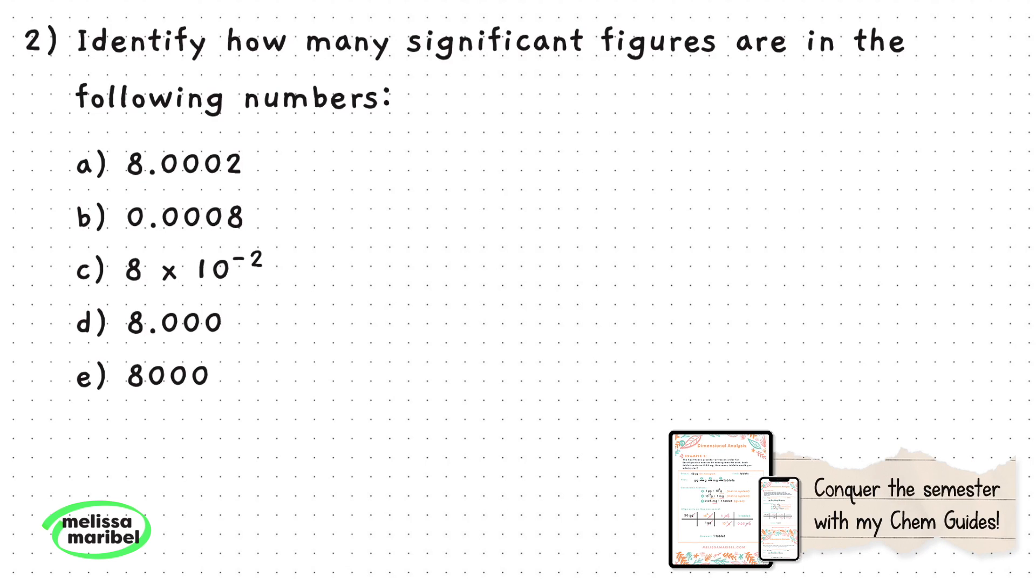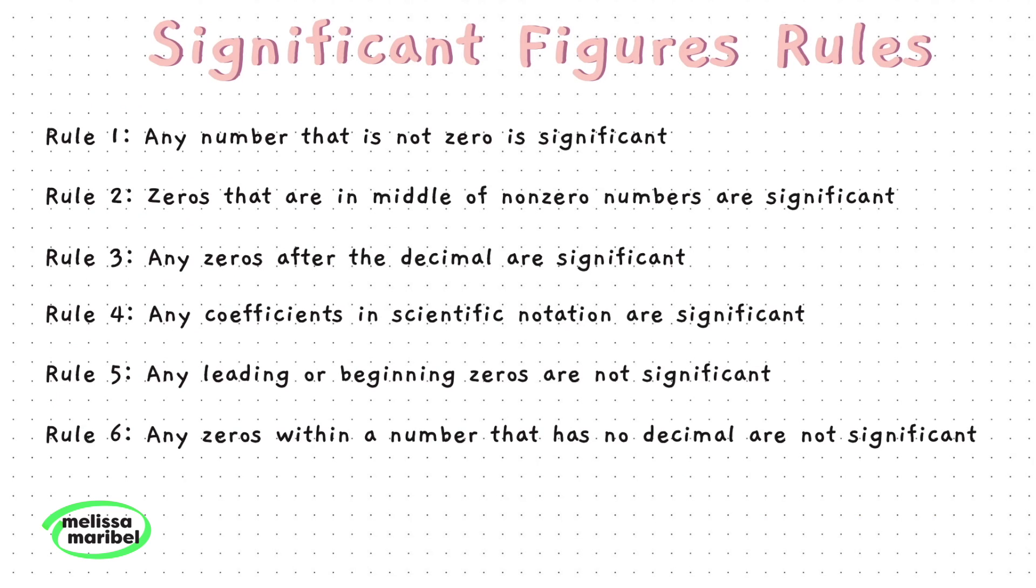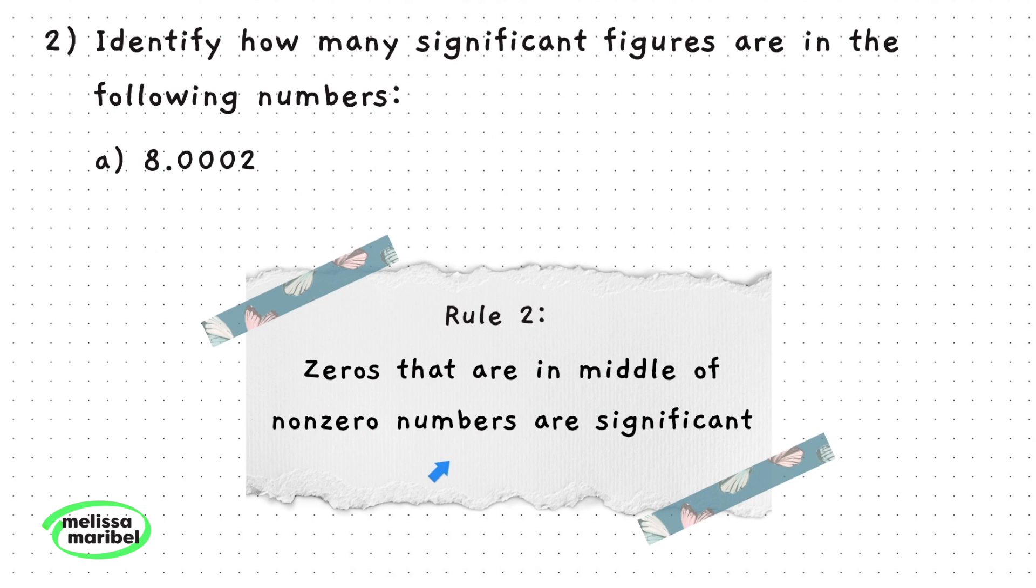Number 2. We are asked to identify how many significant figures are in the following numbers. To do this, we will be using our significant figure rules. Part A follows rule 2, where all zeros in the middle of non-zero numbers count as sig figs. So all these numbers count as significant, so there are five sig figs.